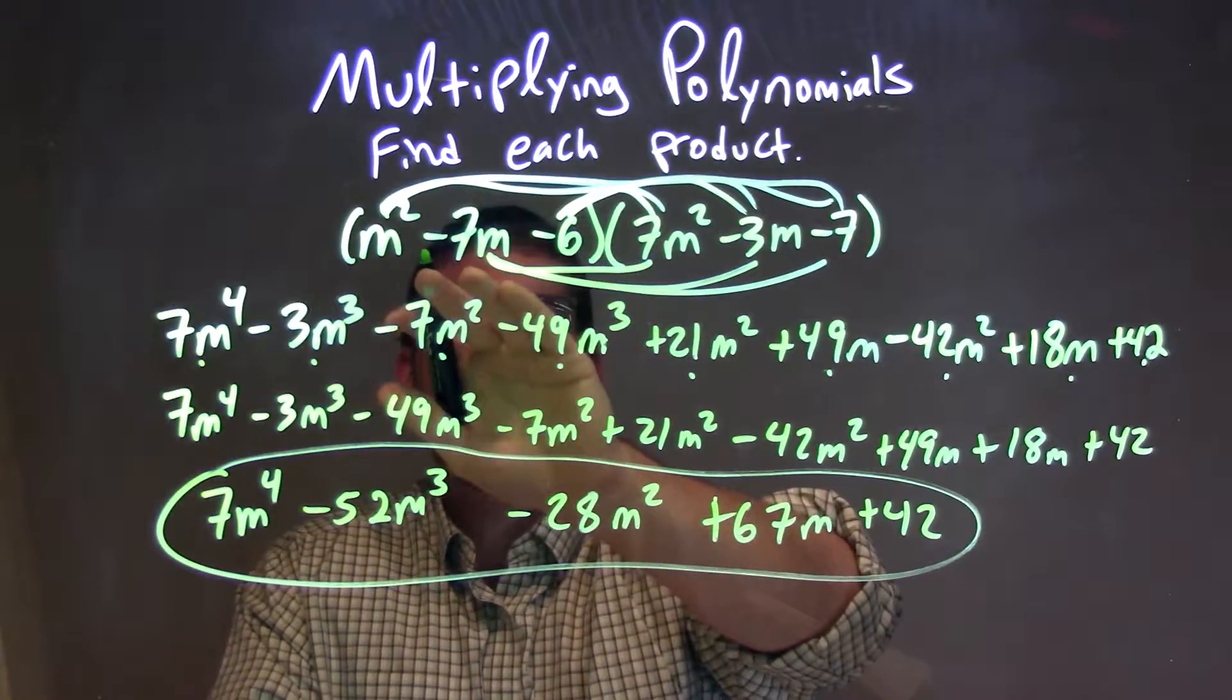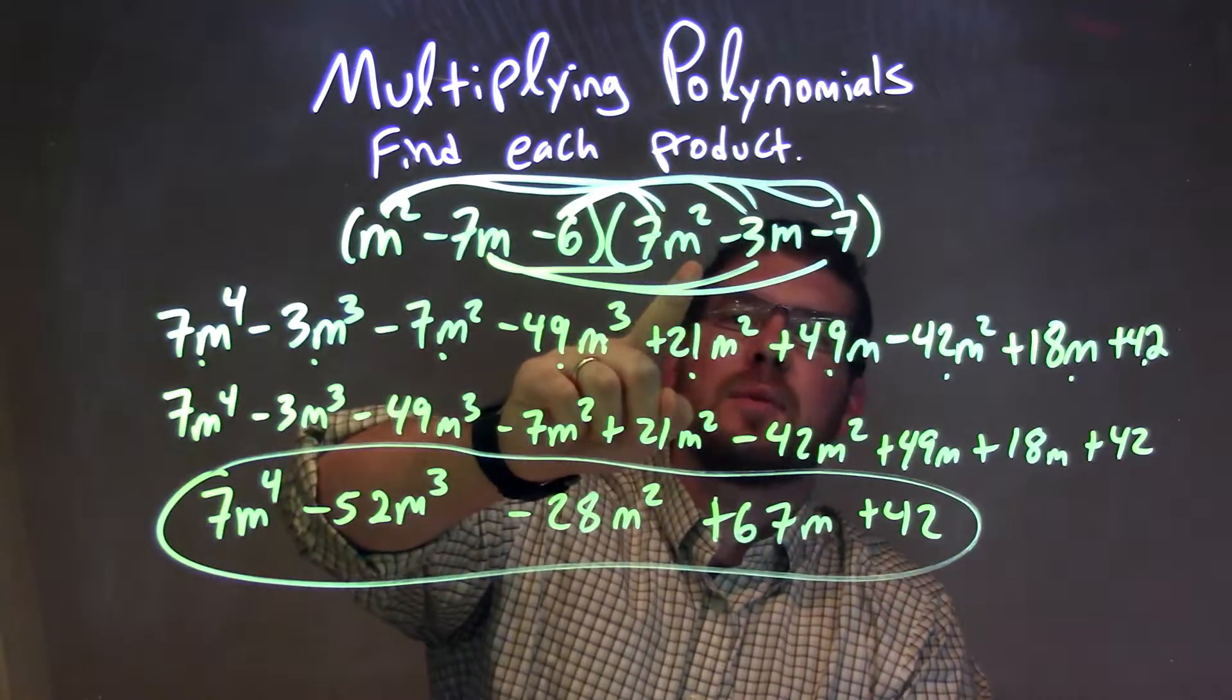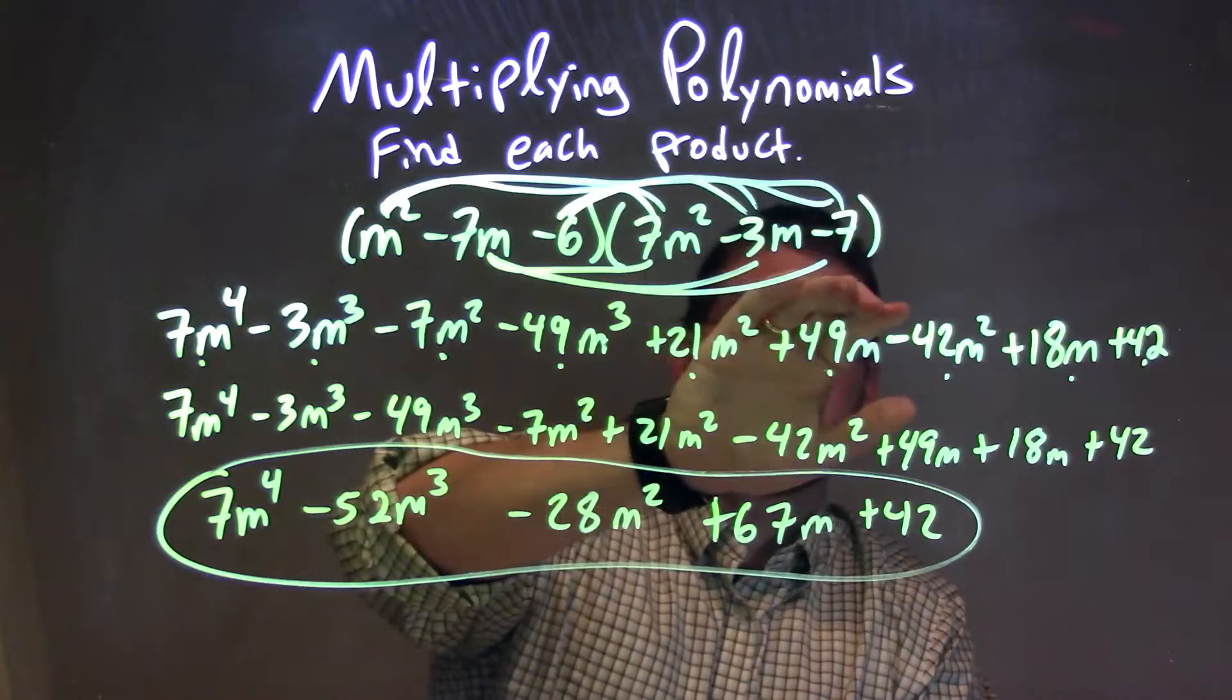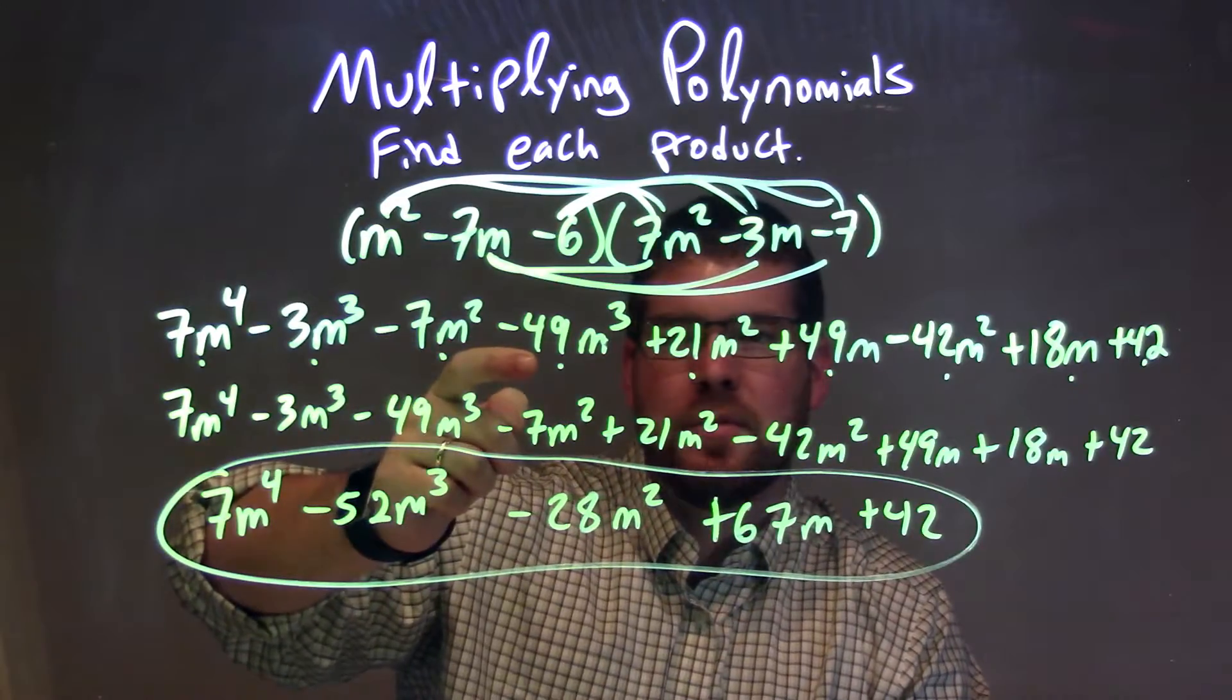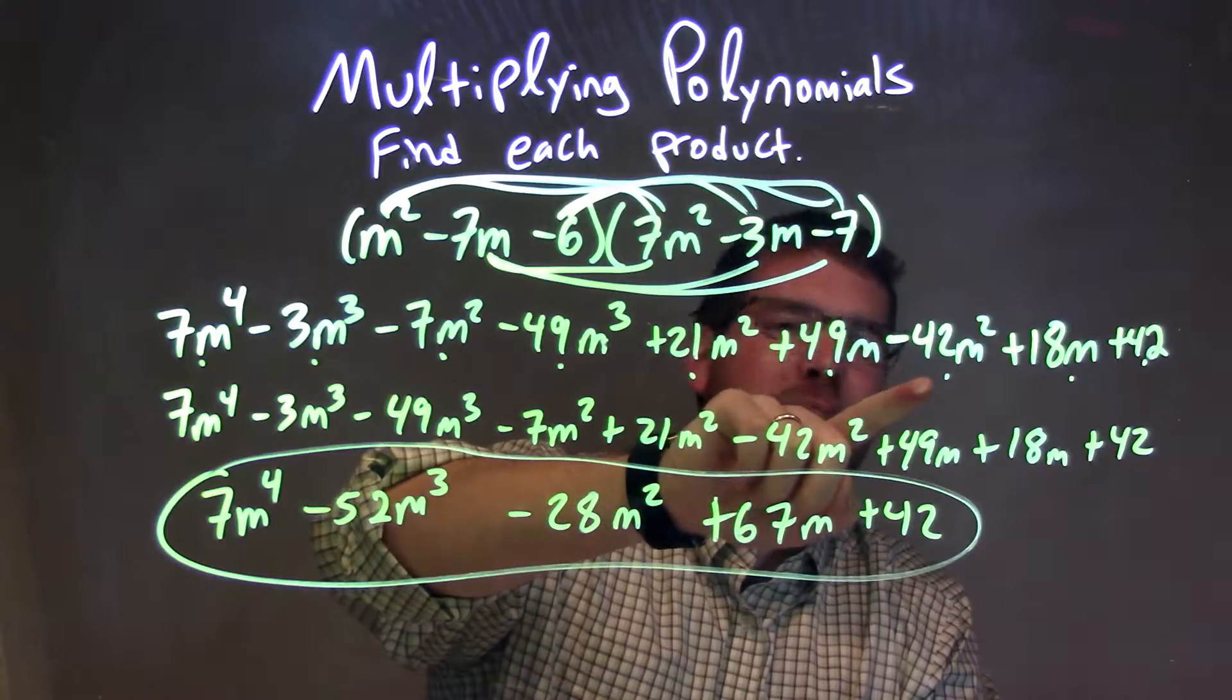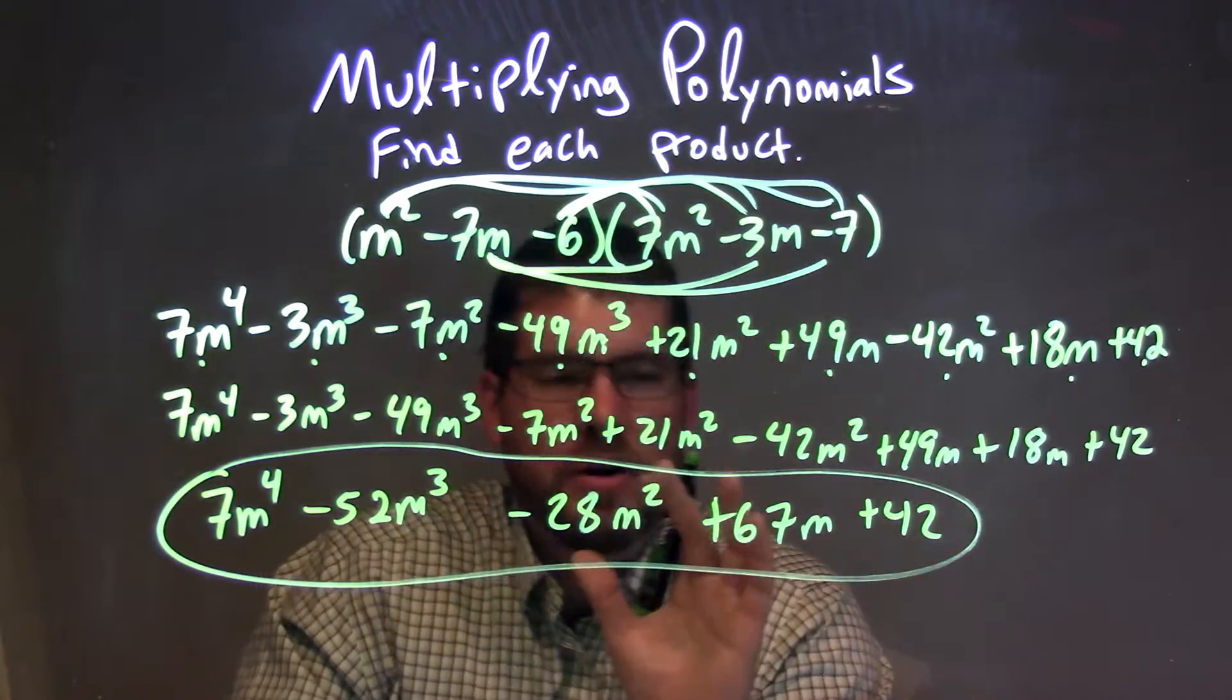Let's recap. We have two parentheses we need to multiply: m squared minus 7m minus 6 times 7m squared minus 3m minus 7. We multiply all parts of the first one by all parts of the second one. That gave us 7m to the fourth minus 3m to the third minus 7m squared minus 49m to the third plus 21m squared plus 49m minus 42m squared plus 18m plus 42. We rearrange our like terms first.